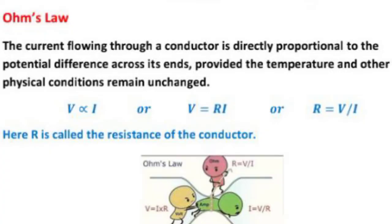Now, what is Ohm's law? The current flowing through a conductor is directly proportional to the potential difference across its ends, provided the temperature and other physical conditions remain unchanged. We can write it as V is directly proportional to I, which gives V equal to RI, or V equal to IR.